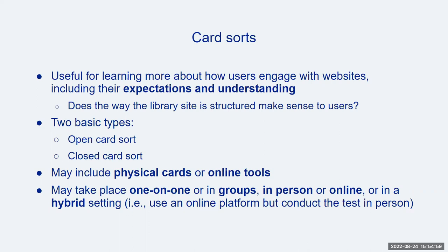A card sort allows you to observe how participants group together information or topics related to a website. Knowing how users think about categories of information on a website can help you as you build an underlying structure, determine what to put on a homepage, or label top-level navigation or categories of information. You can spend a huge amount of time brainstorming the best label or language to use to describe something, but if you never involve your users in brainstorming or research, you won't know how effective or meaningful to the general public that language or label actually is.